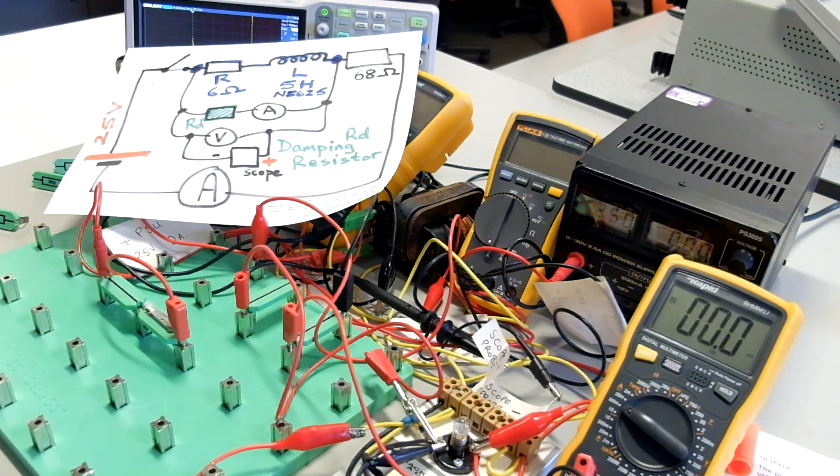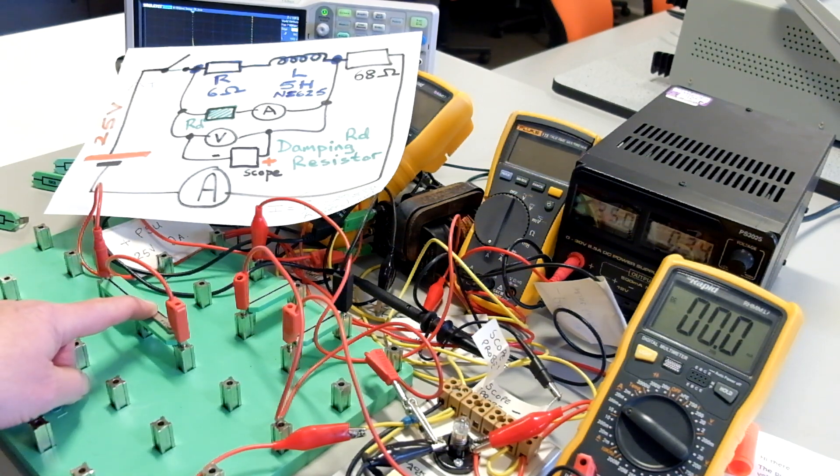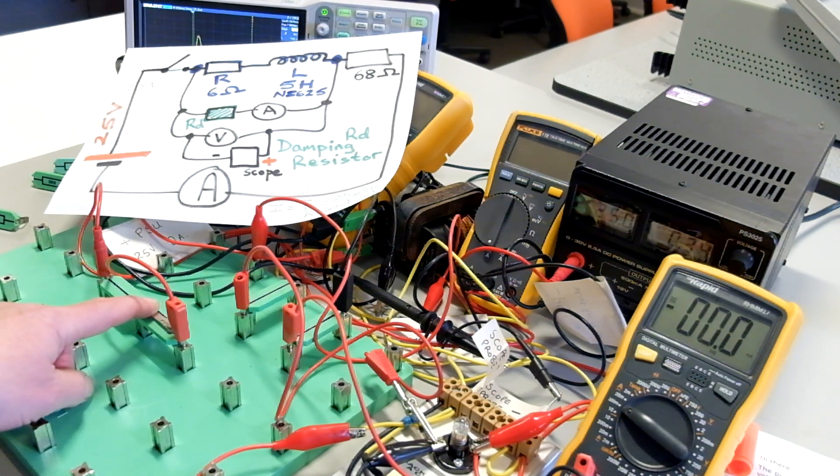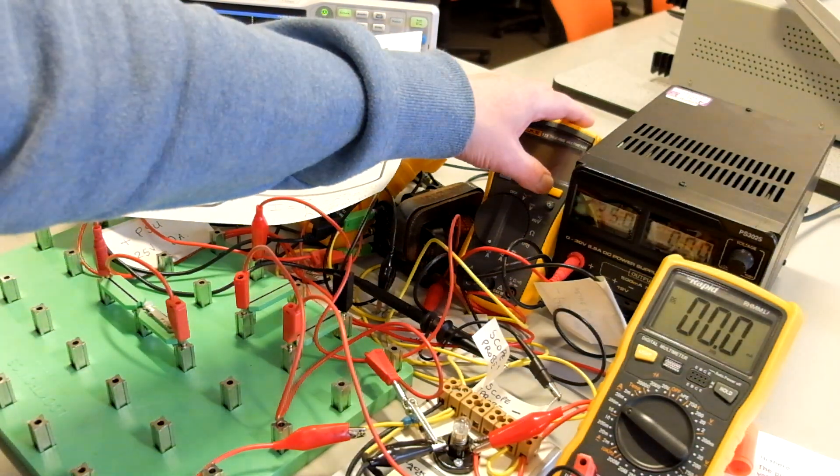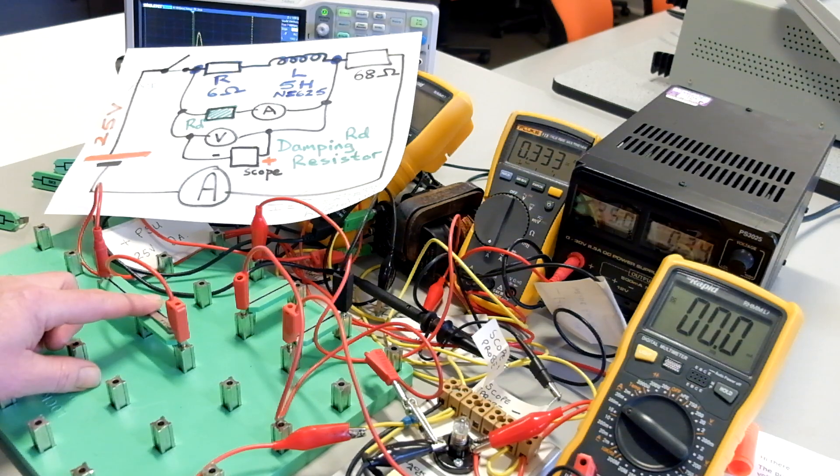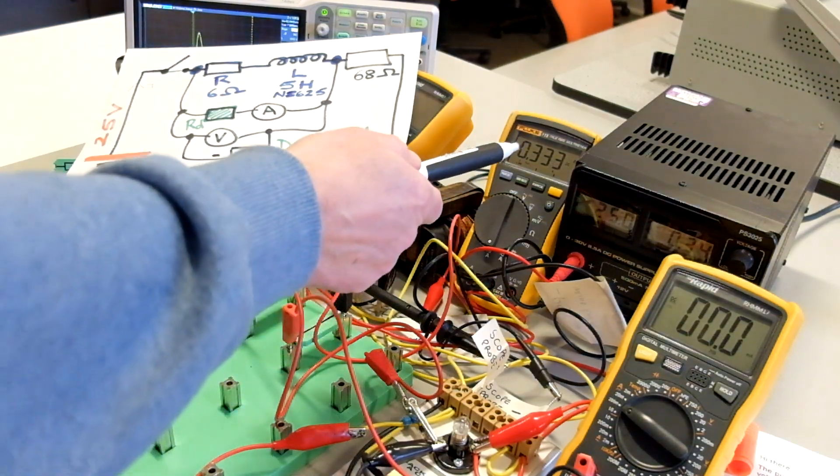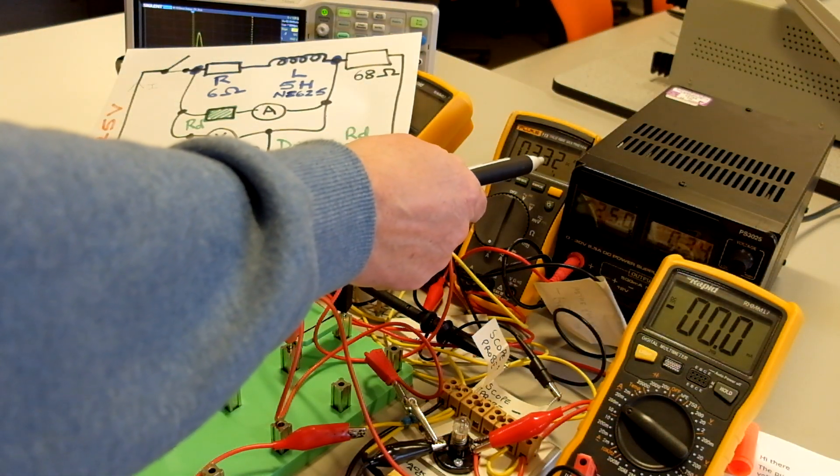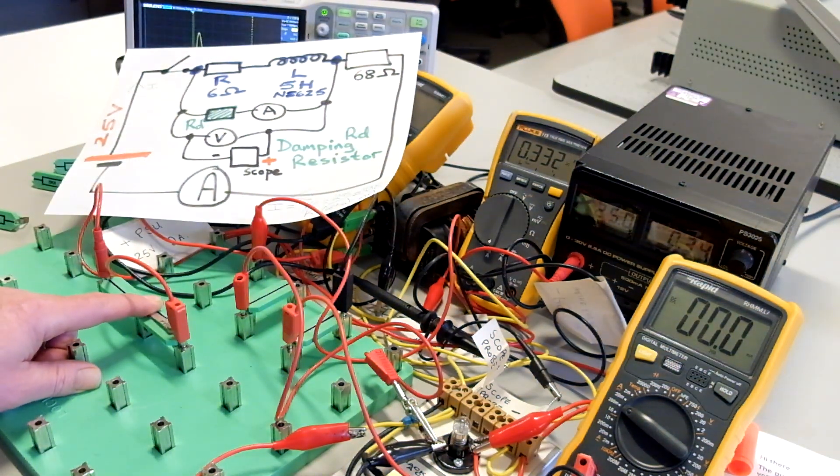The current will be switched on or off by making a simple mechanical metal switch. So when we switch the current on, we can see on this meter that reads 333 milliamps, which is very close to the 338 predicted by Ohm's law.